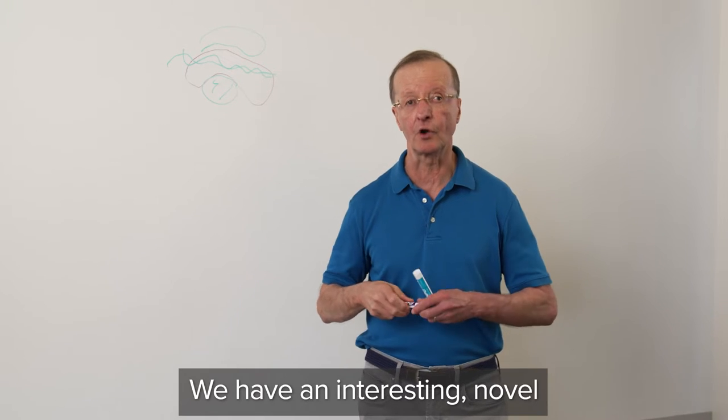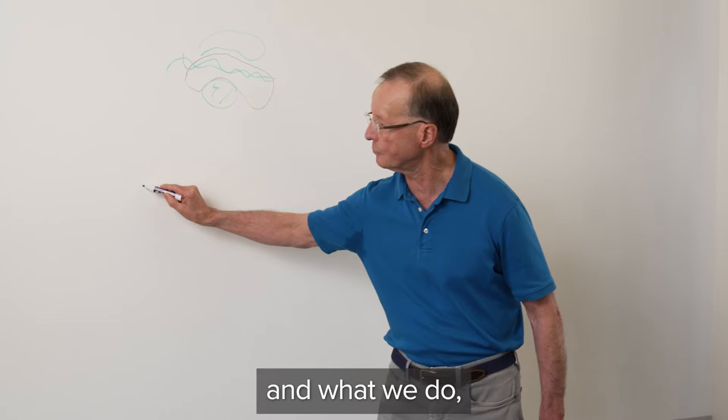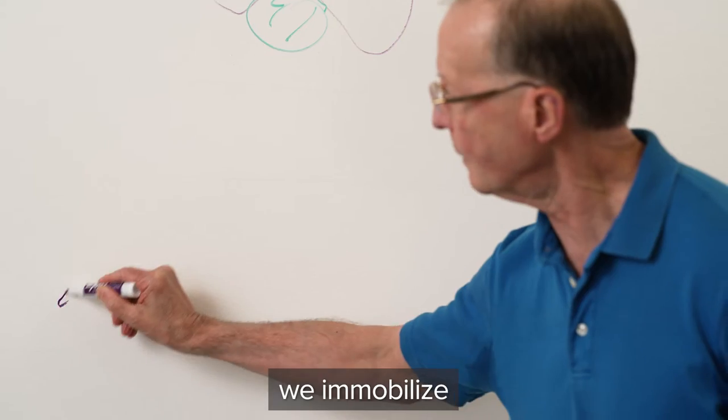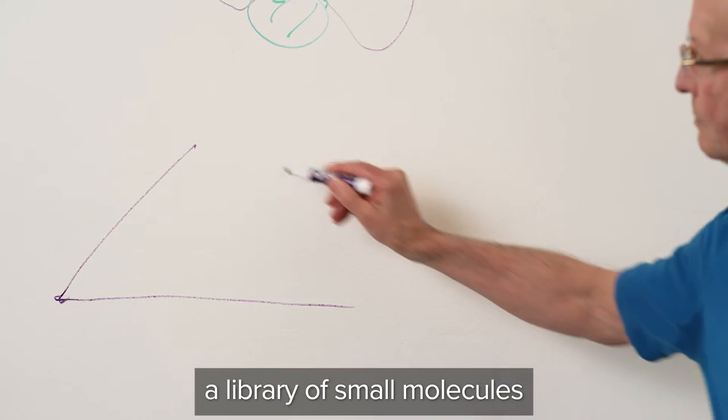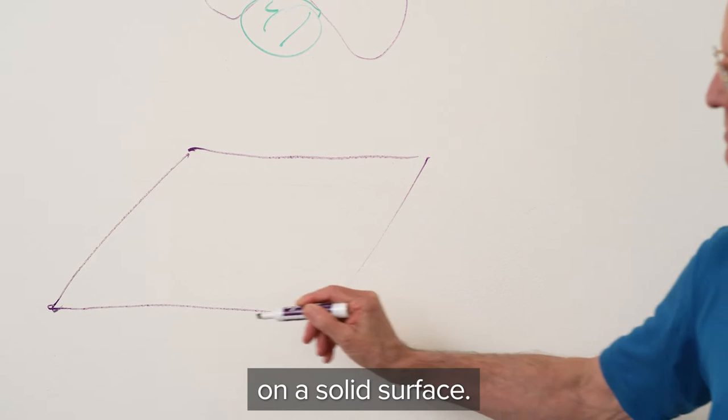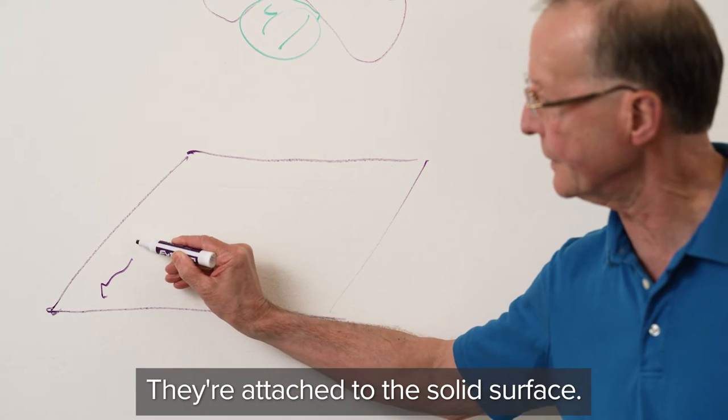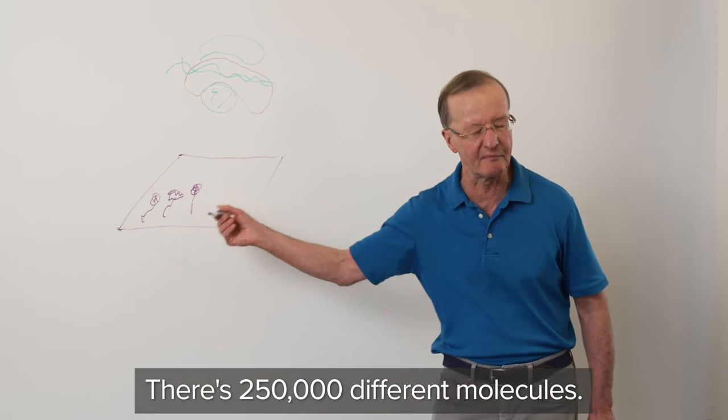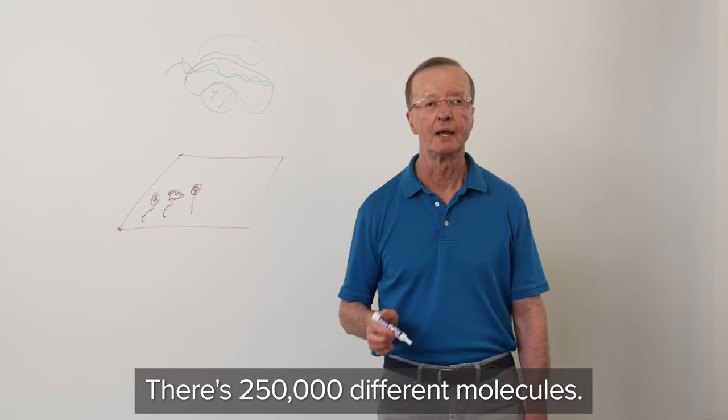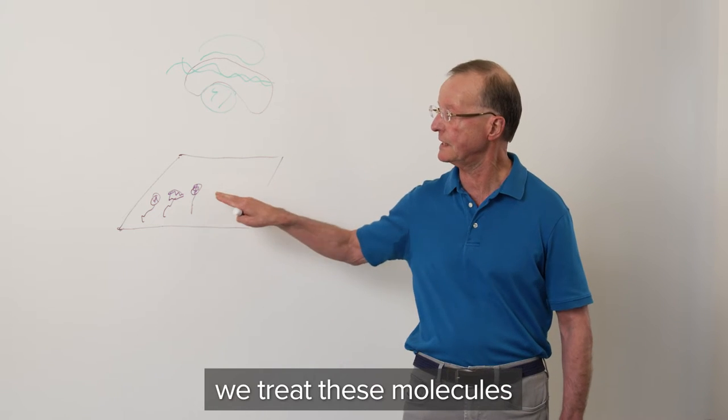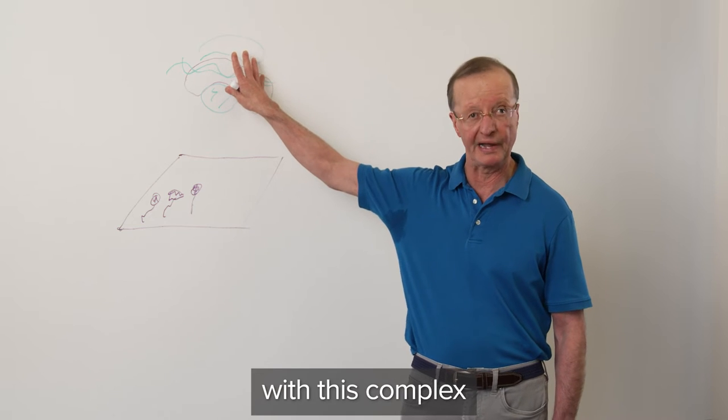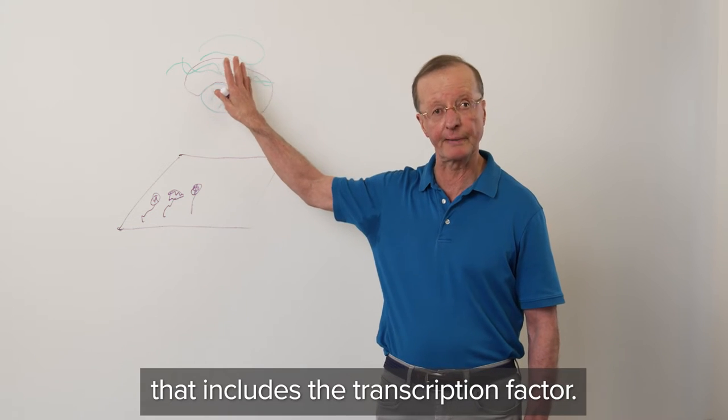We have an interesting novel screening methodology. What we do is we immobilize a library of small molecules on a solid surface. So this is what it looks like. They're attached to the solid surface. There's 250,000 different molecules, and what we do now is we treat these molecules with this complex that includes the transcription factor.